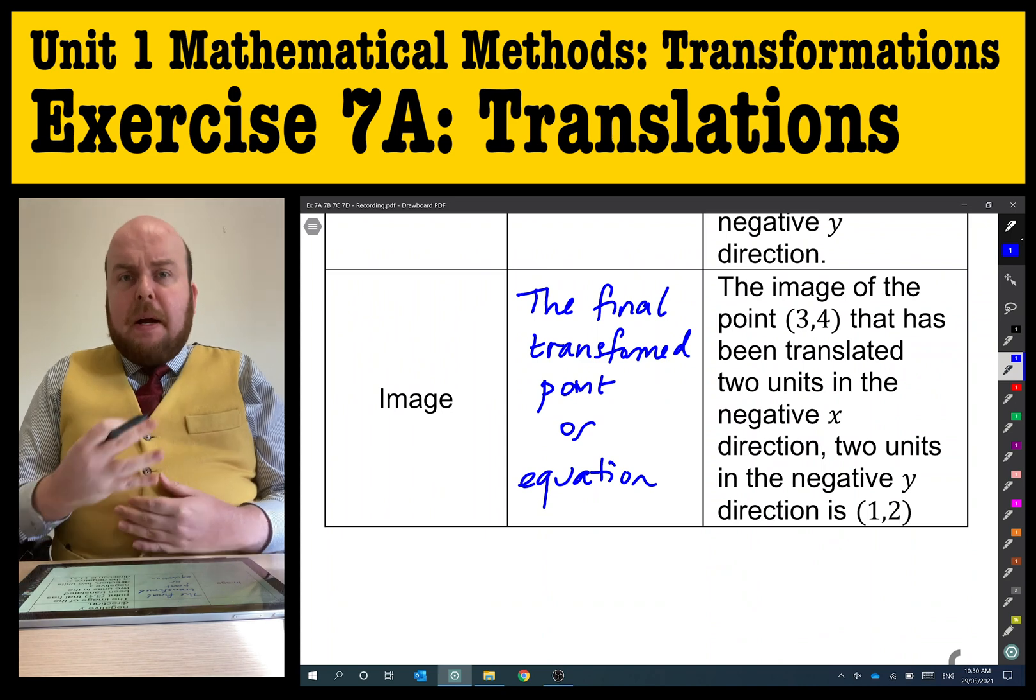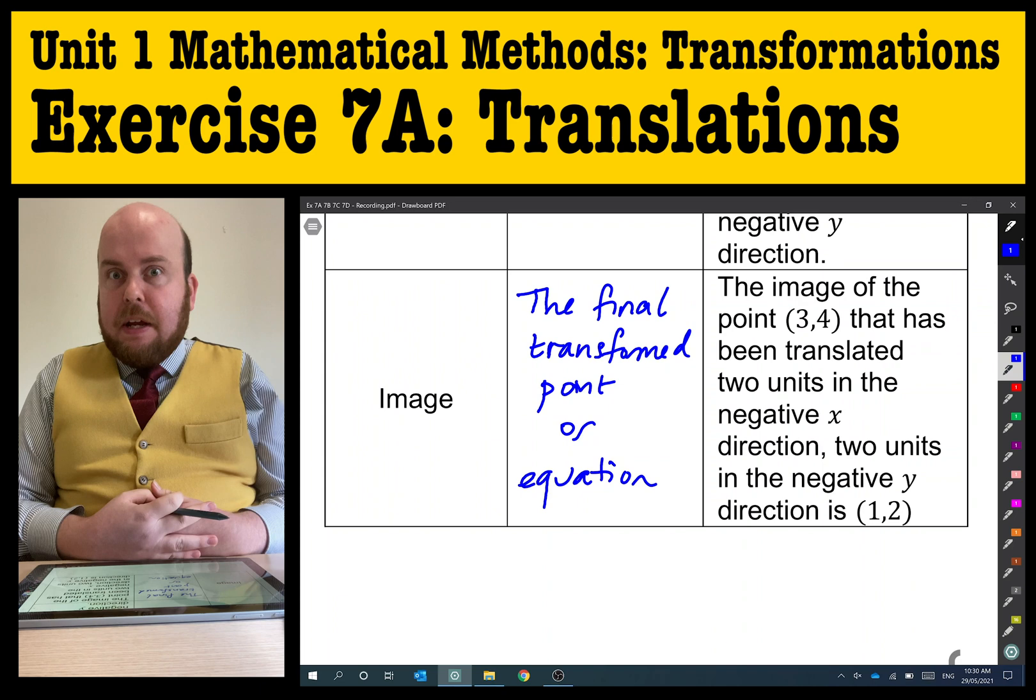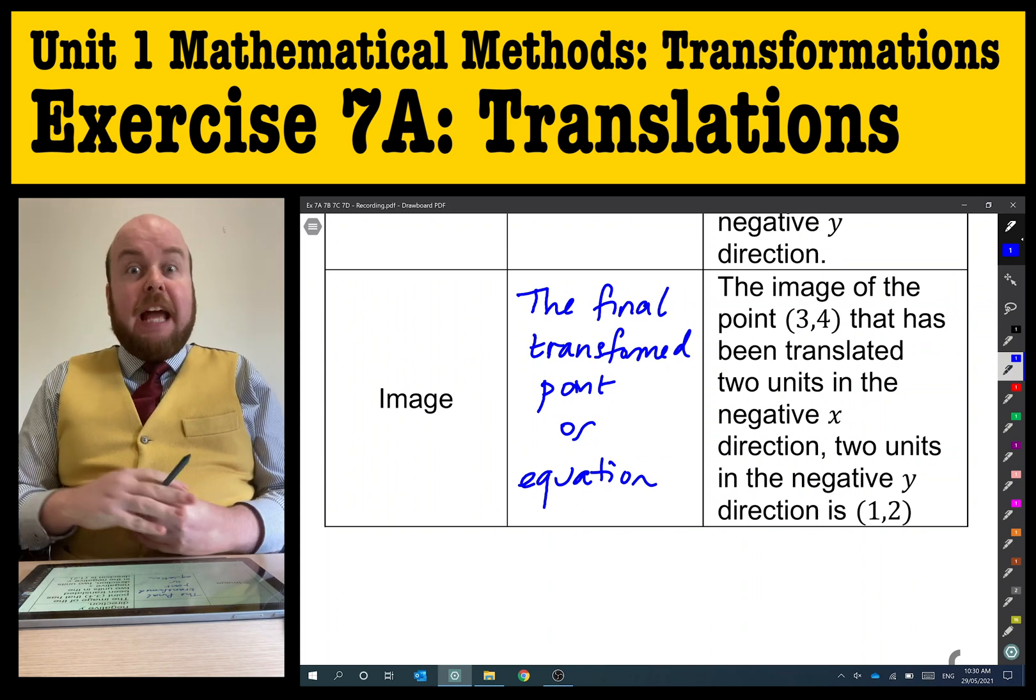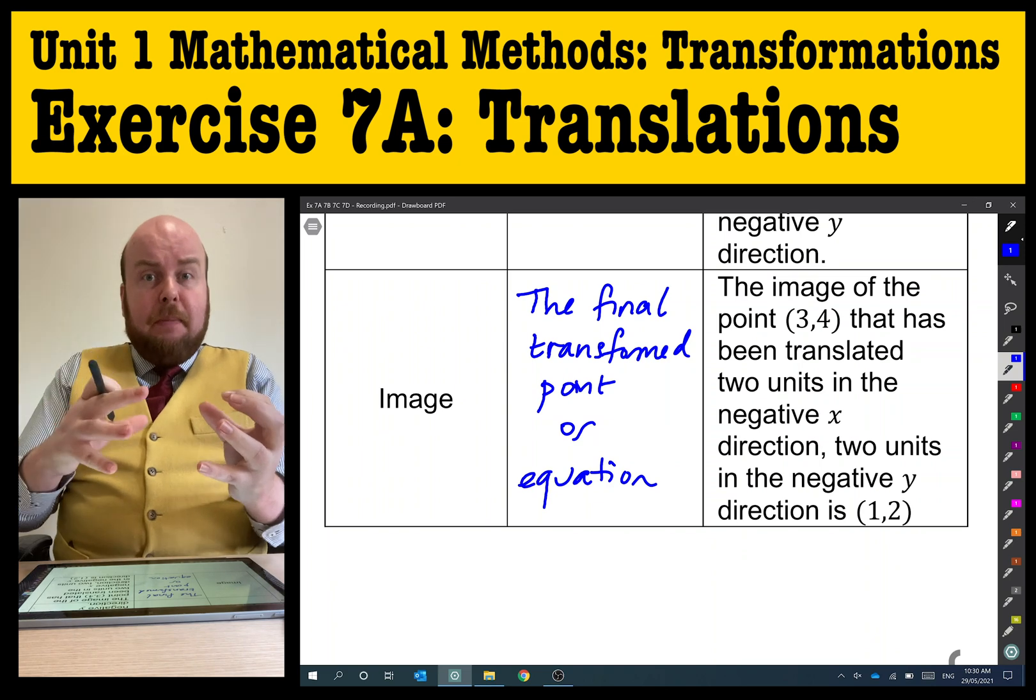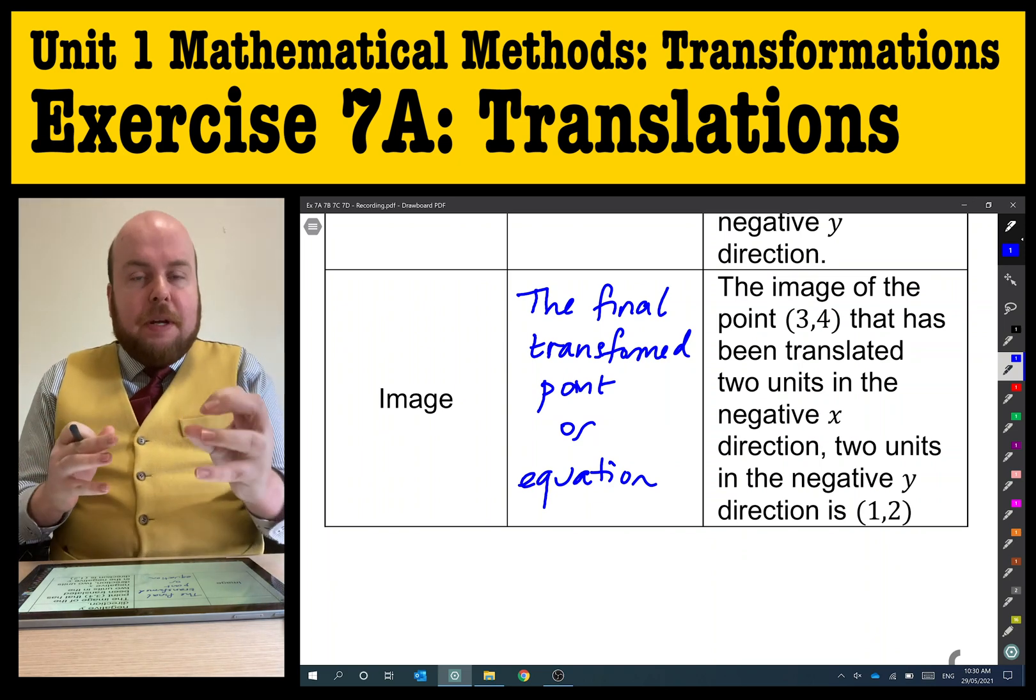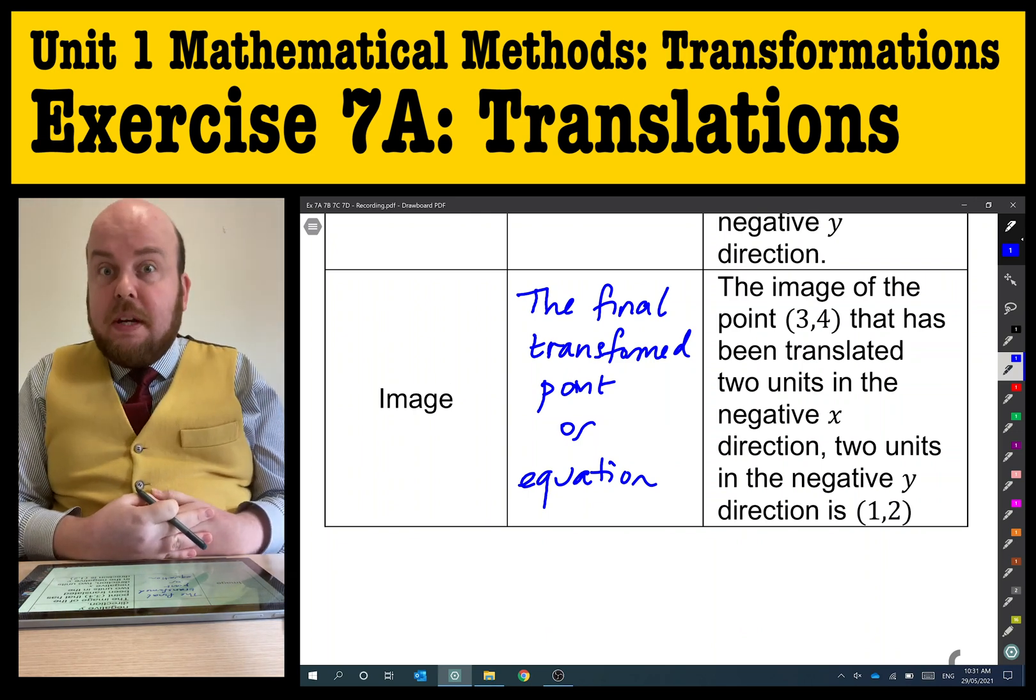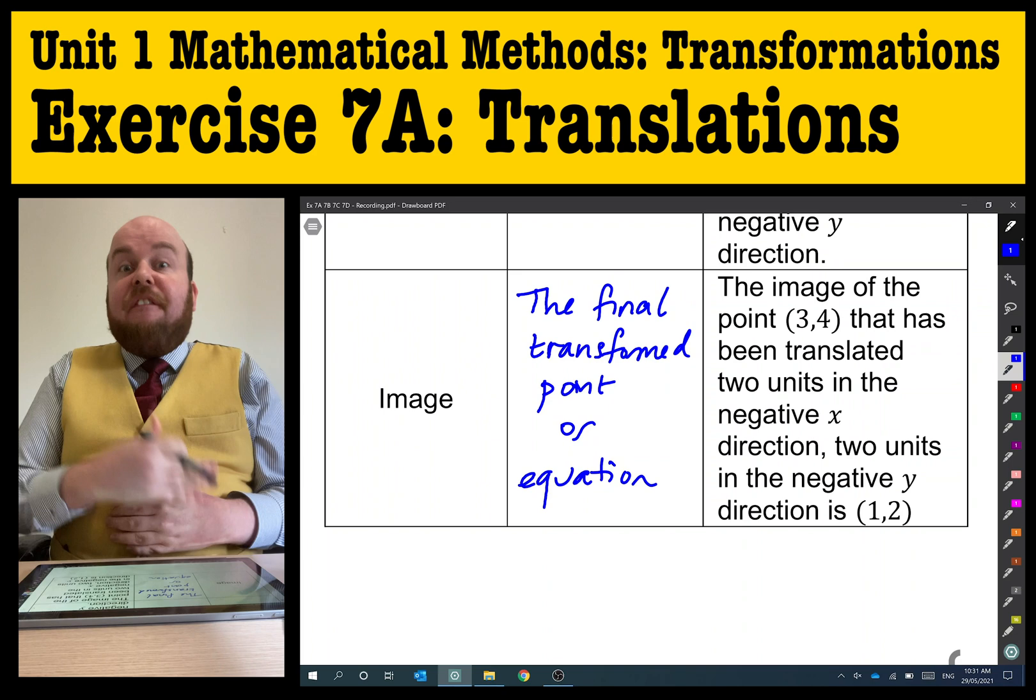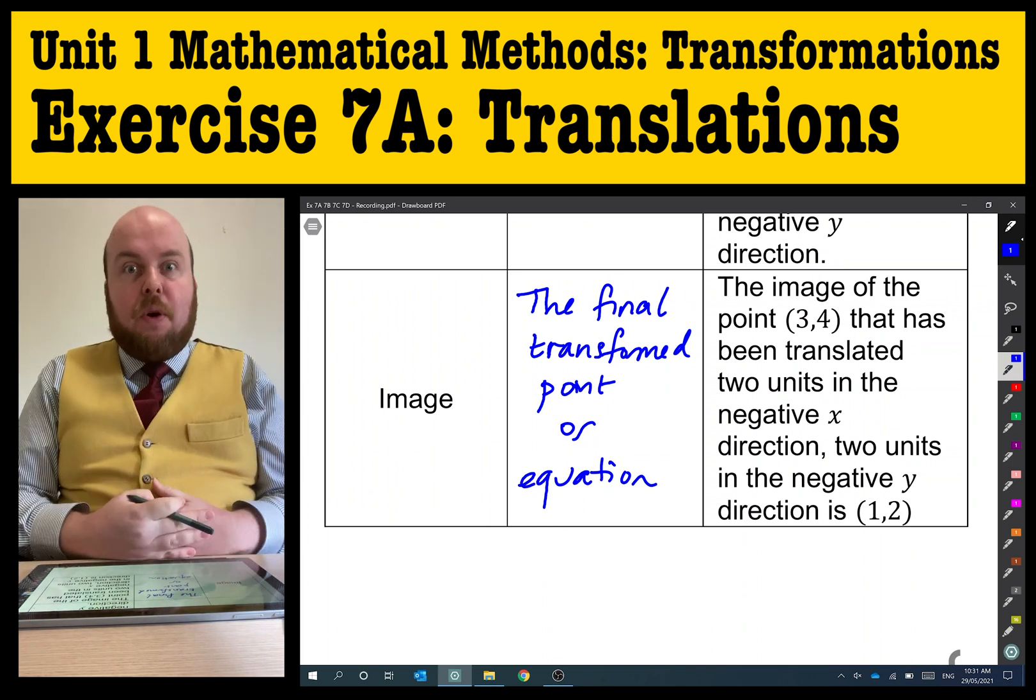Image. Imagine the same way that when I switch on my TV, there's an image on it. Where did it come from? It had to be filmed from a real object. I've got a real object, I film it, and what I film, that is the image of that original object. In the same way, the image of a set of coordinates or a function is the final transformed equation or set of coordinates.